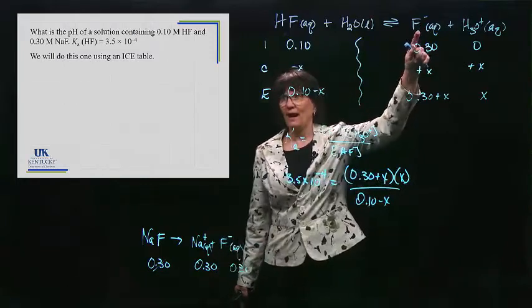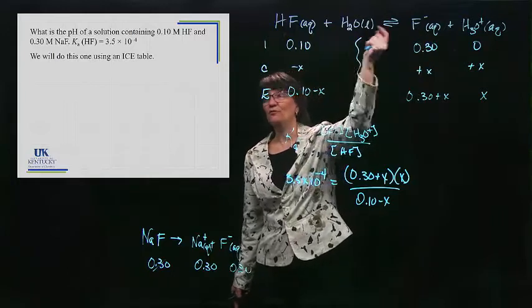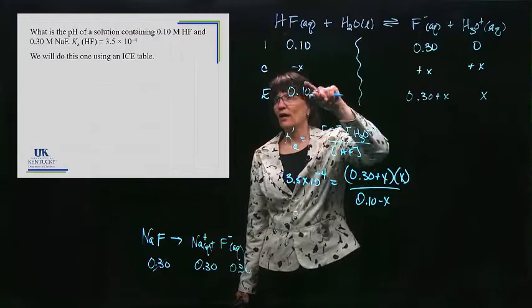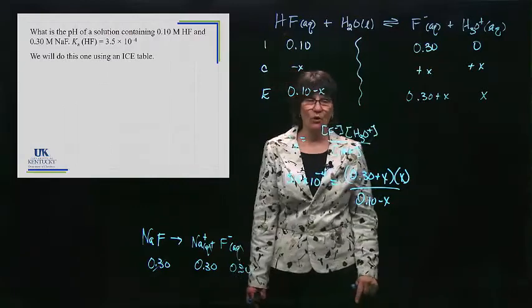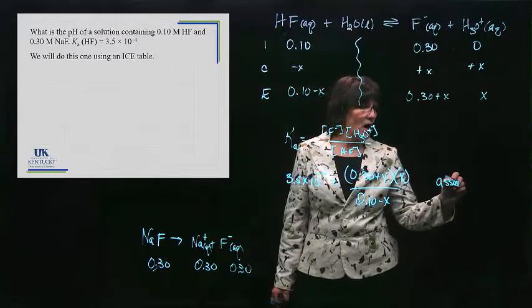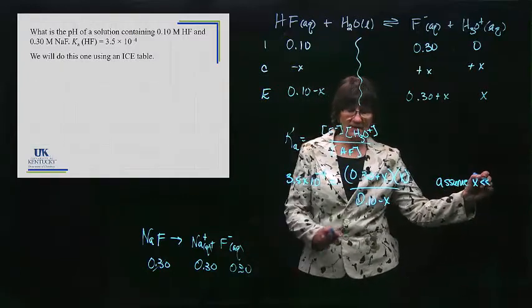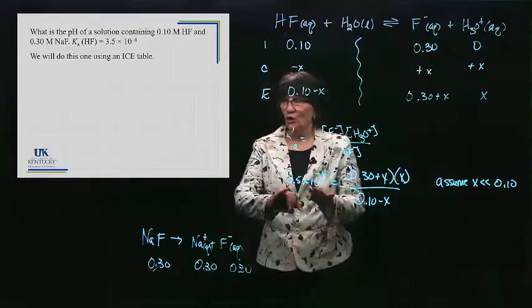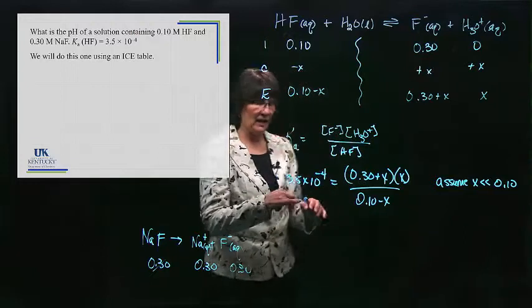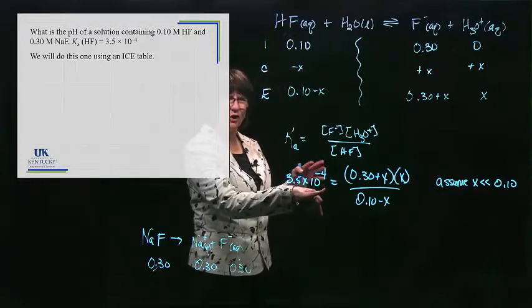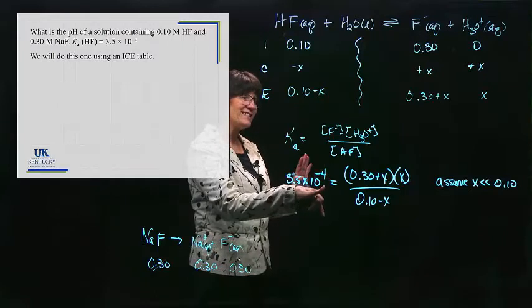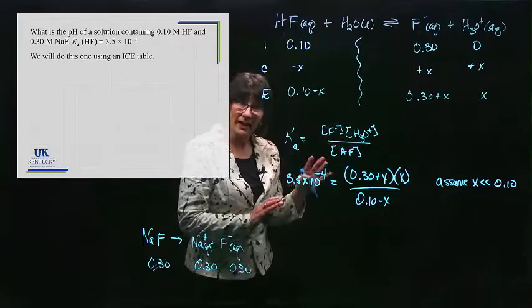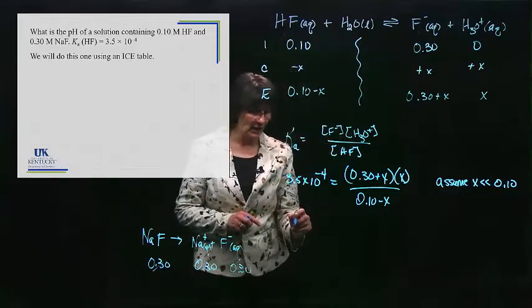Now, adding this common ion pushes this equilibrium further left than it would be if it was just plain old water. So it's going to have even smaller X than what you would have expected before. But let's make our assumption. OK. We're going to assume that X is much, much less than, well, let's say 0.10. OK. Or smaller of the 2. This is a little questionable in terms of the Ka, and I'll get out of the way so you can see it. It's 10 to the minus 4, and I kind of told you you'd be looking for 10 to the minus 5. But since this is a common ion problem, it's likely going to be OK, and we'll see if it is, because we will check our assumption.